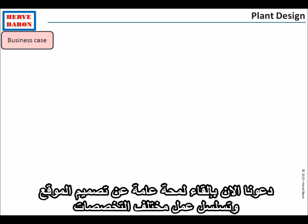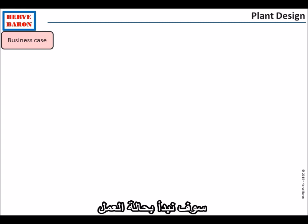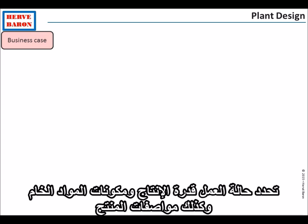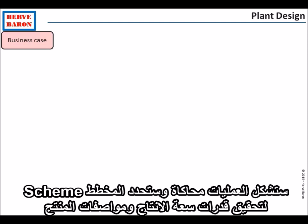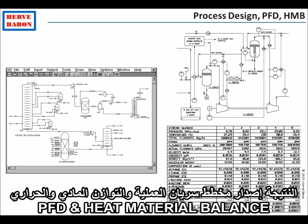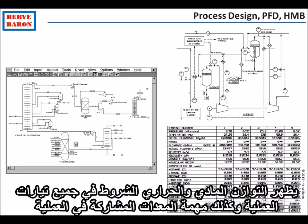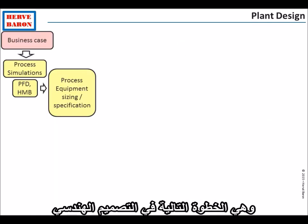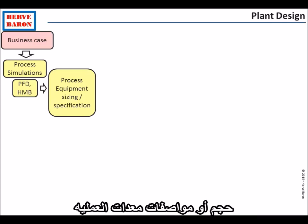Let's give you an overview of the plant design and the sequence of work of the various disciplines. It all starts with the business case, which defines the plant capacity, the feedstock composition, as well as the product specifications. Process will perform simulations and define a process scheme to achieve these product capacities and specifications. The result will be the issuance of a process flow diagram and heat and matter balances, which show the conditions in all process streams as well as the duty of all the equipment involved in the process.